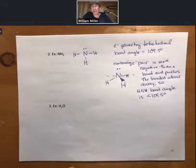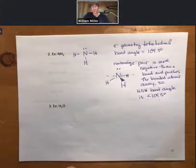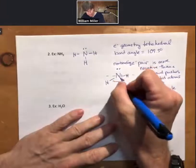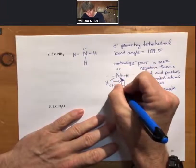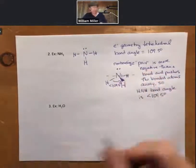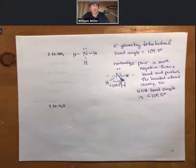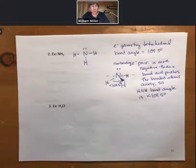All you have to remember is that if there's a lone pair of electrons on the central atom, the bond angle for the atoms is less than 109.5 degrees. It's only a couple of degrees difference, and the exact number isn't worth memorizing.